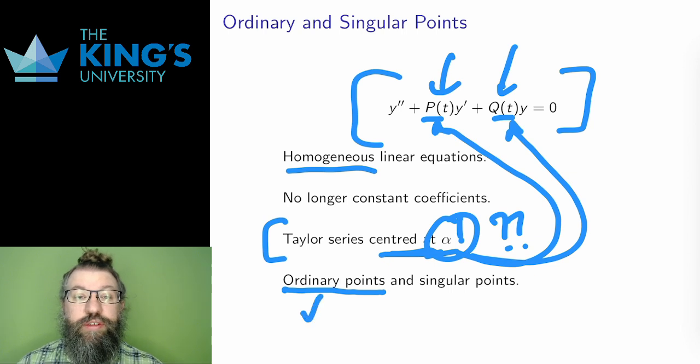At ordinary points, the series solution will always work. If either p or q are not analytic at alpha, then alpha is called a singular point, and I'll cover these in a few videos later.